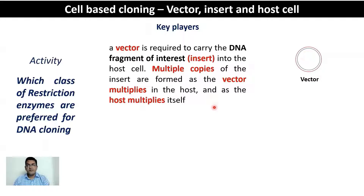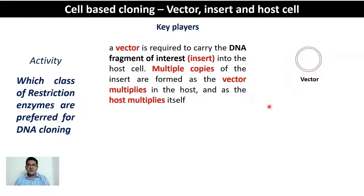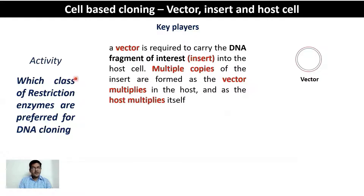Multiple copies of the insert are formed as the vector replicates independently of the host cell and also as the host cell multiplies. The vector is autonomous and can replicate independently of the host cell DNA, replicating at a much quicker rate compared to host DNA. As a cell divides, the vectors also divide and continue replication in daughter cells, making the amplification exponential.